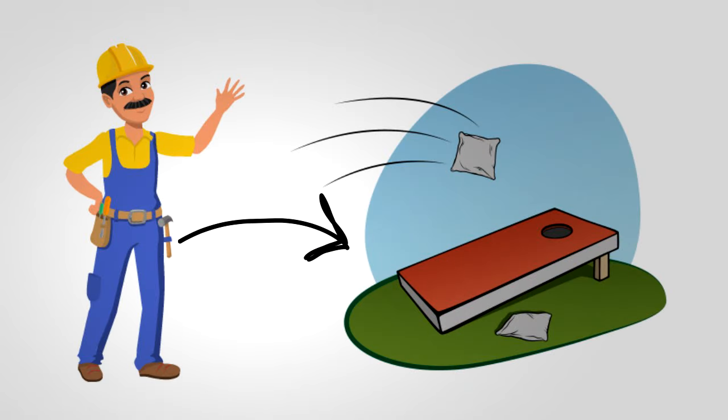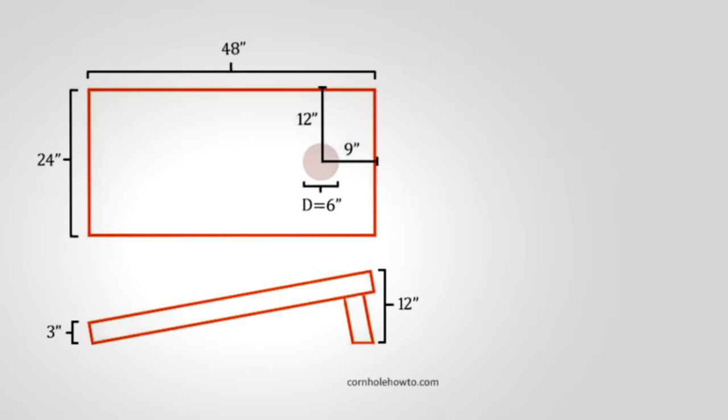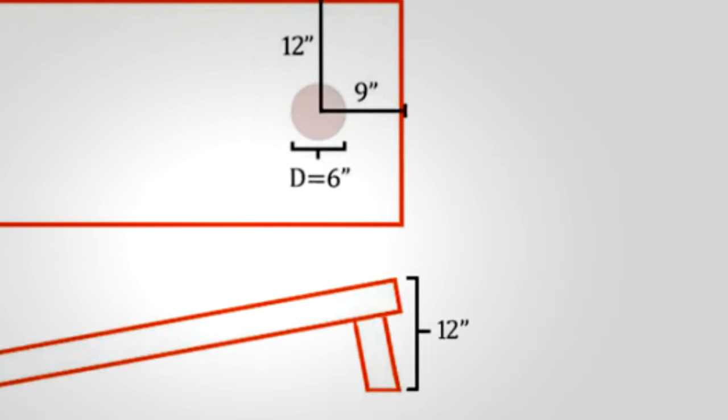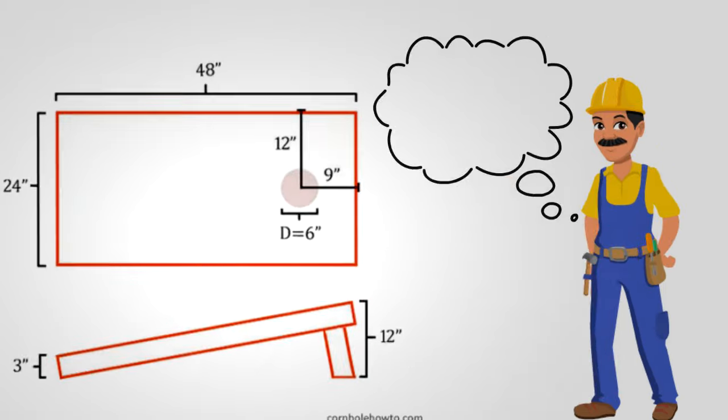How to build a cornhole board. Cut the hole 8 inches from the top of the plywood, place the center of the compass 12 inches from both sides and draw a circle with a 3 inch radius. Use the jigsaw to cut the circle.